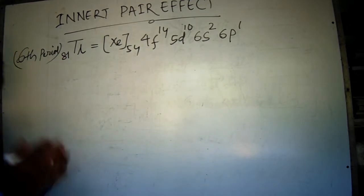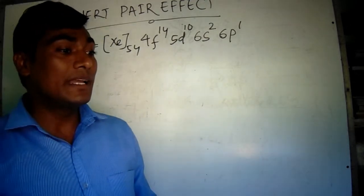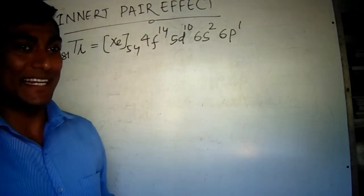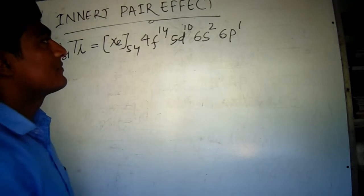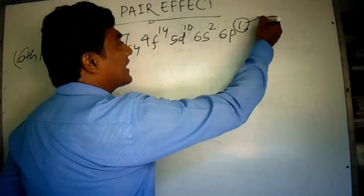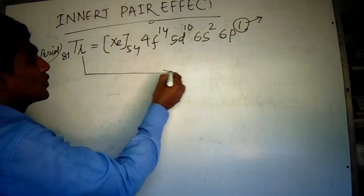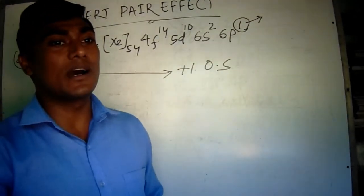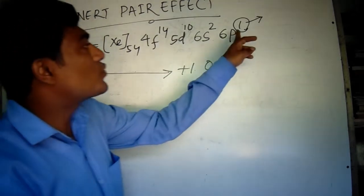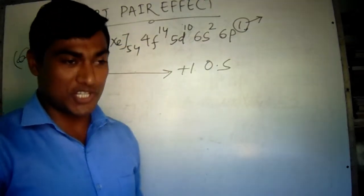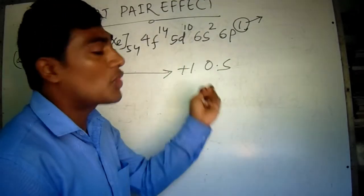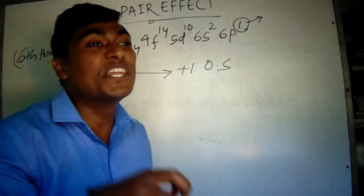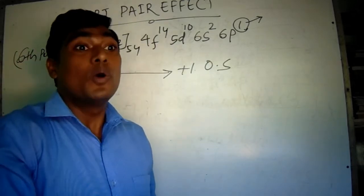See why thallium increasingly shows the +1 oxidation state as its stable oxidation state. After the loss of this electron, thallium shows +1 oxidation state. This is because when this one electron is lost, the remaining two electrons in the S atomic orbital become inert.